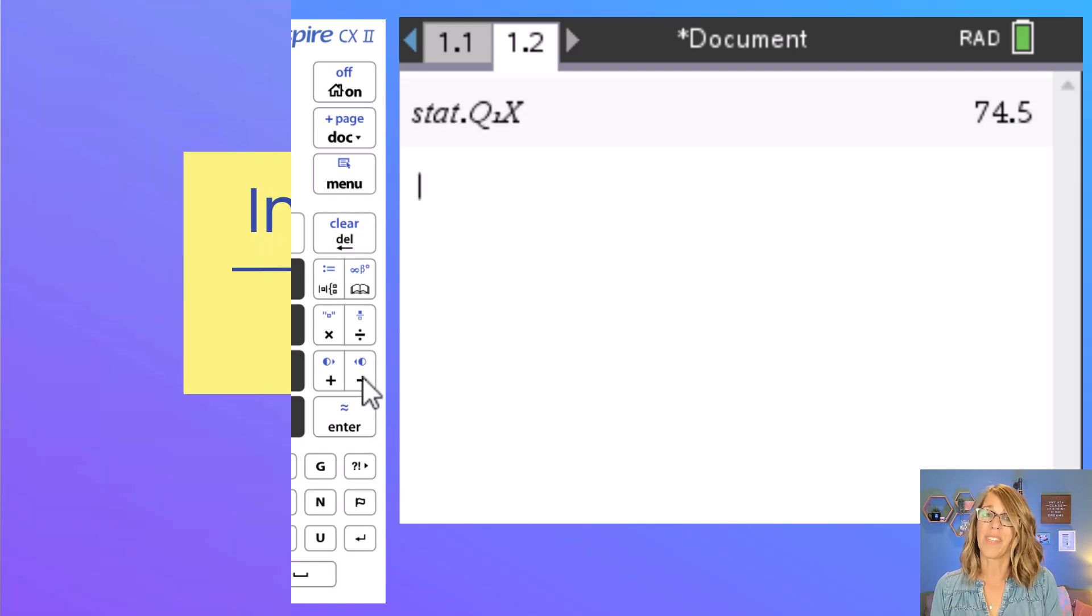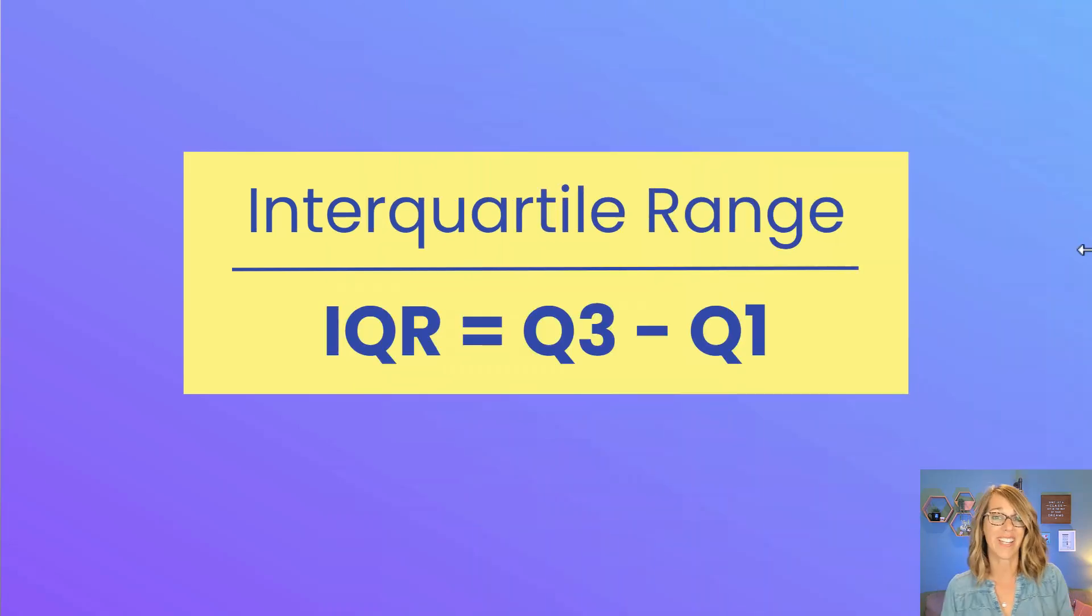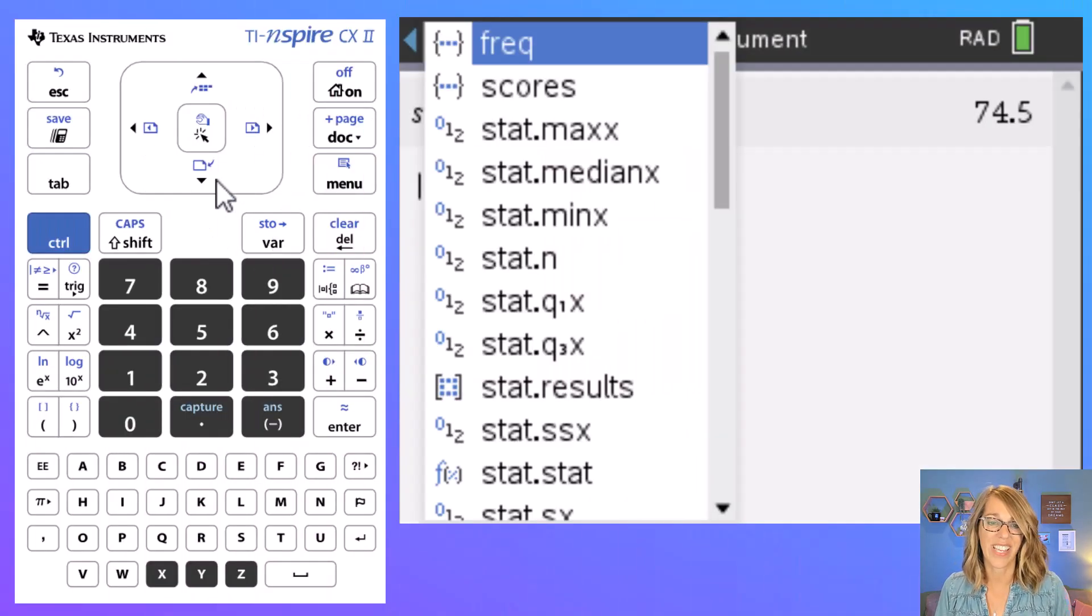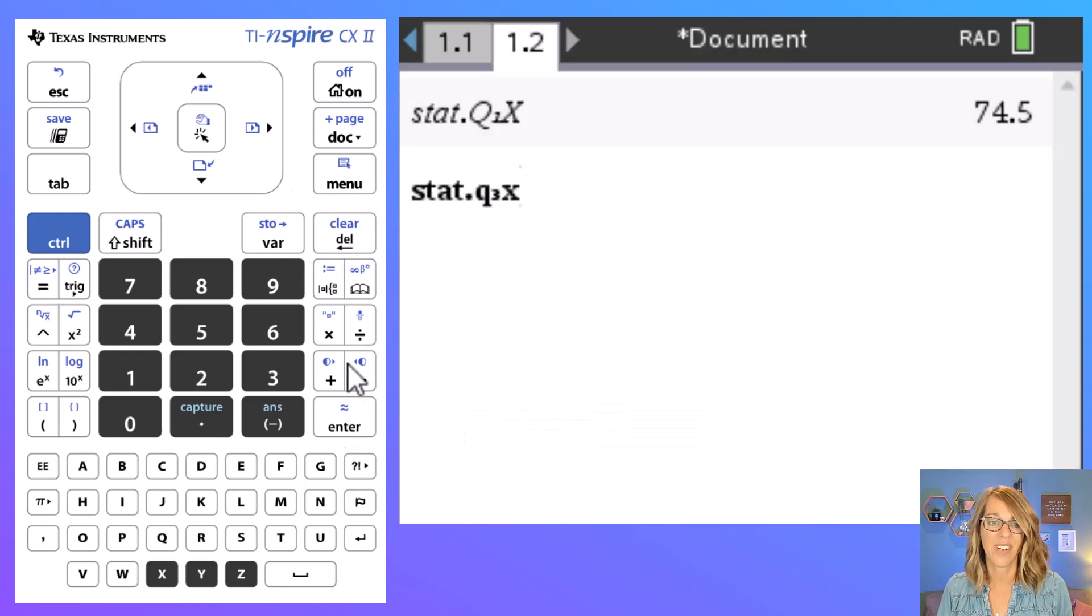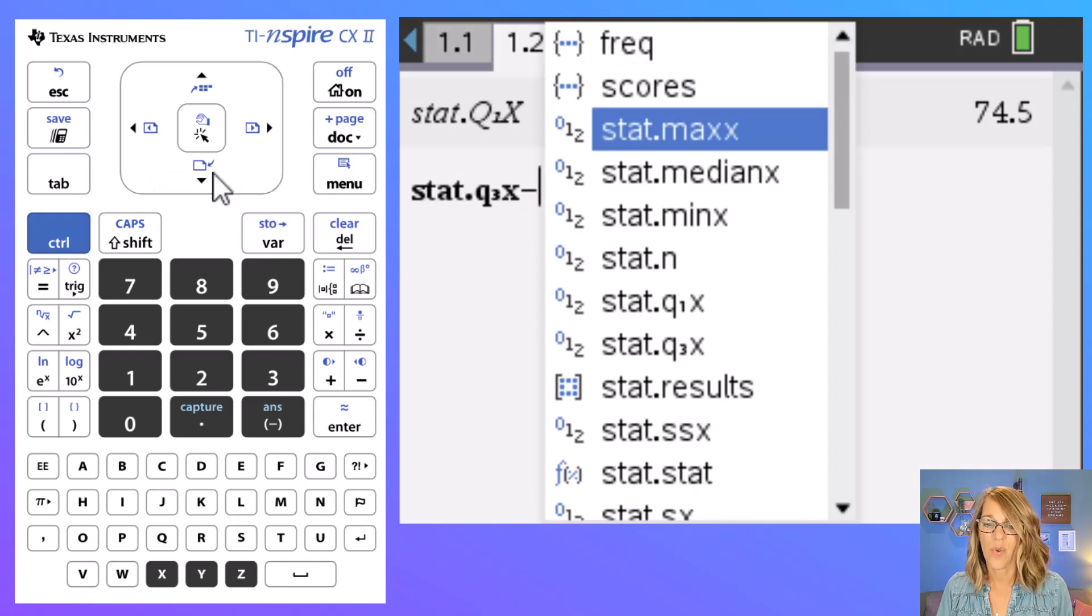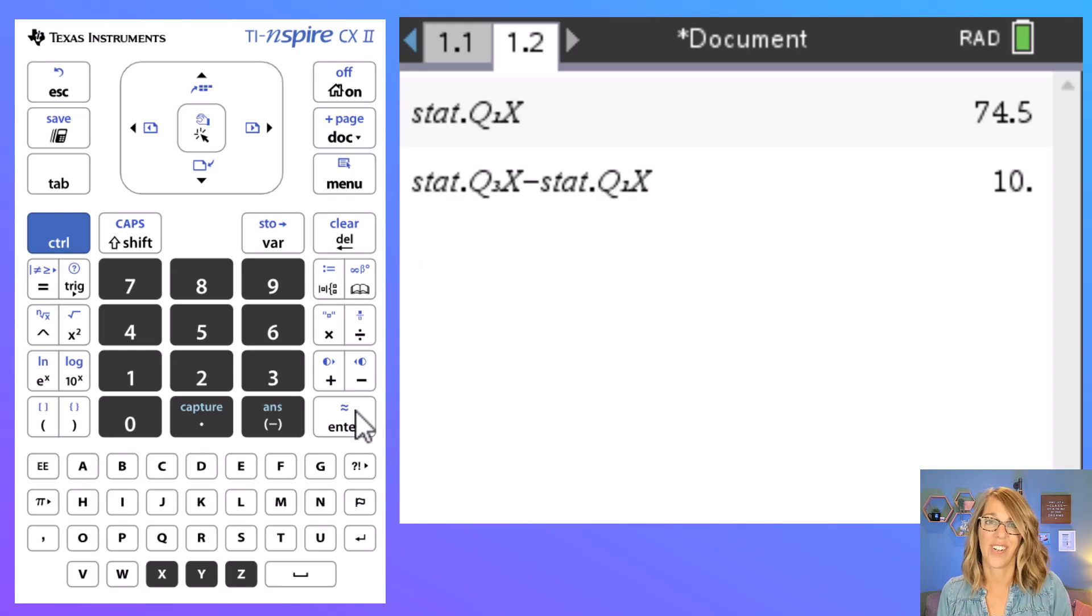I can also do something like an interquartile range. That would be quartile three minus quartile one. To find that I'm going to go to my var key, arrow down and I'll do quartile three and then enter, minus quartile one. Back to my var key, quartile one. Enter and then enter again.